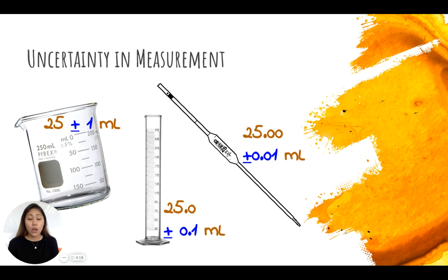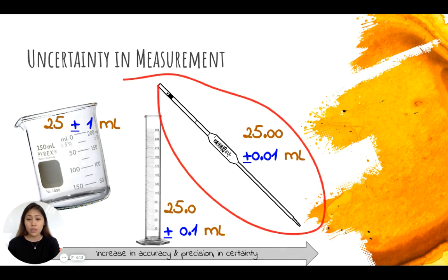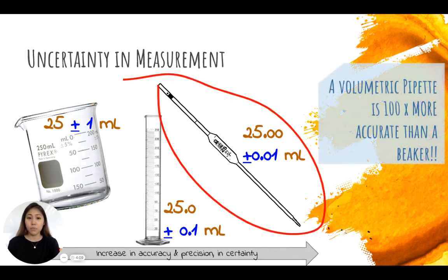So if we take a look and we compare these three different glassware, we could see that this one is definitely more accurate. A volumetric pipette, if you look at the uncertainty of plus or minus 0.01 compared to a beaker of plus or minus one, with the units all being milliliters, we could see that a volumetric pipette is a hundred times more accurate than a beaker.